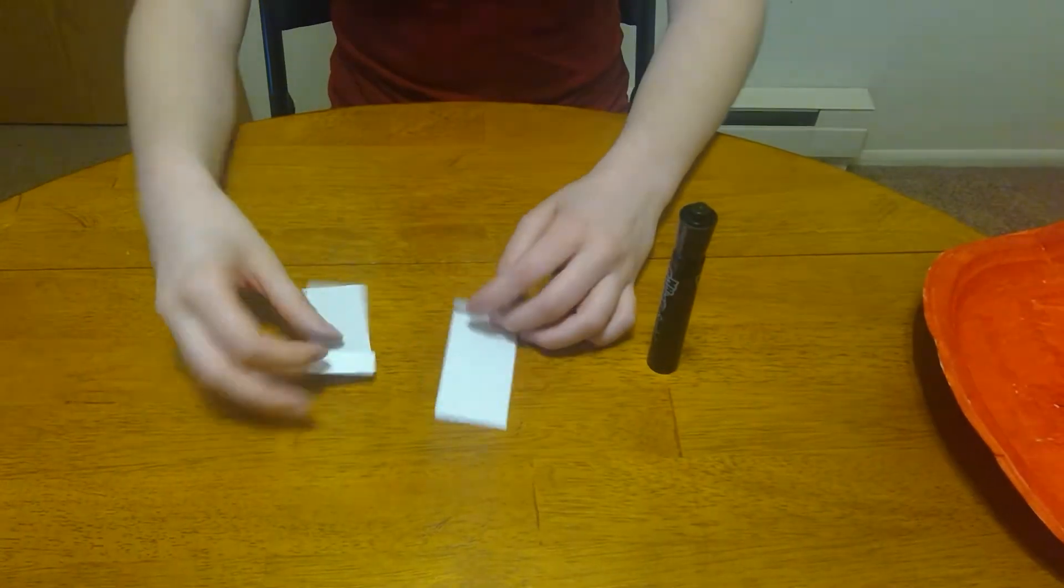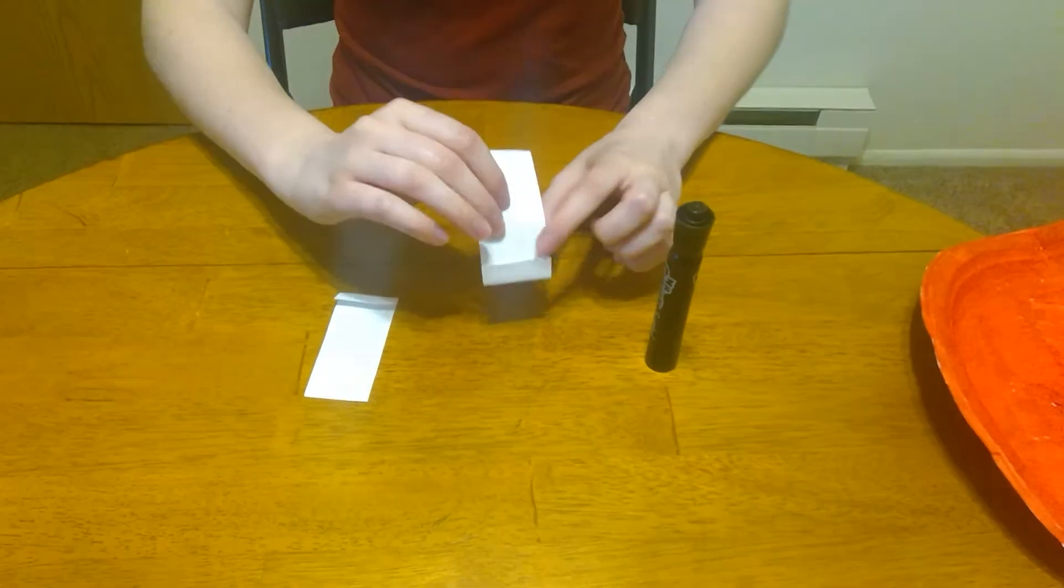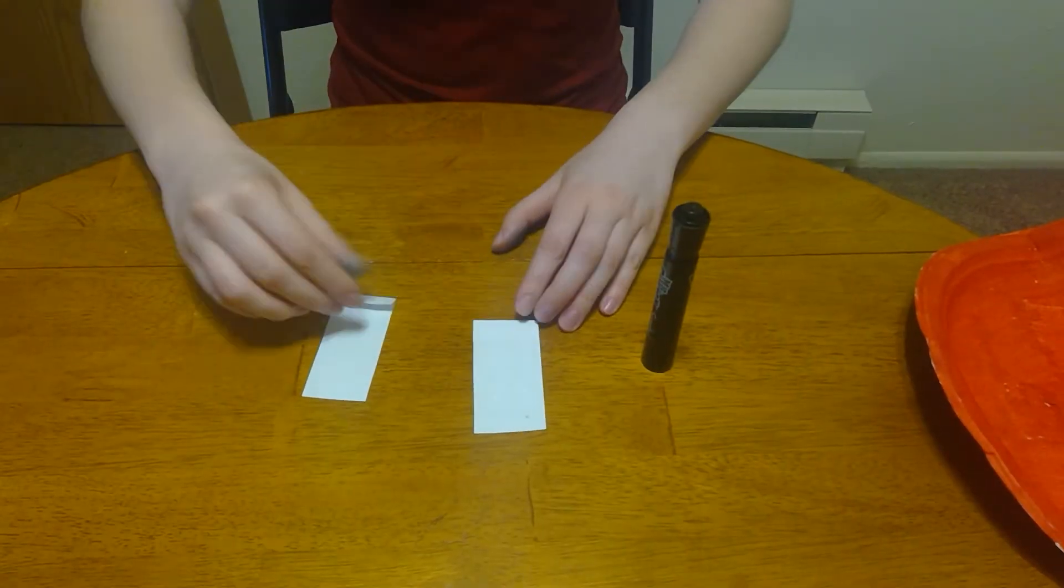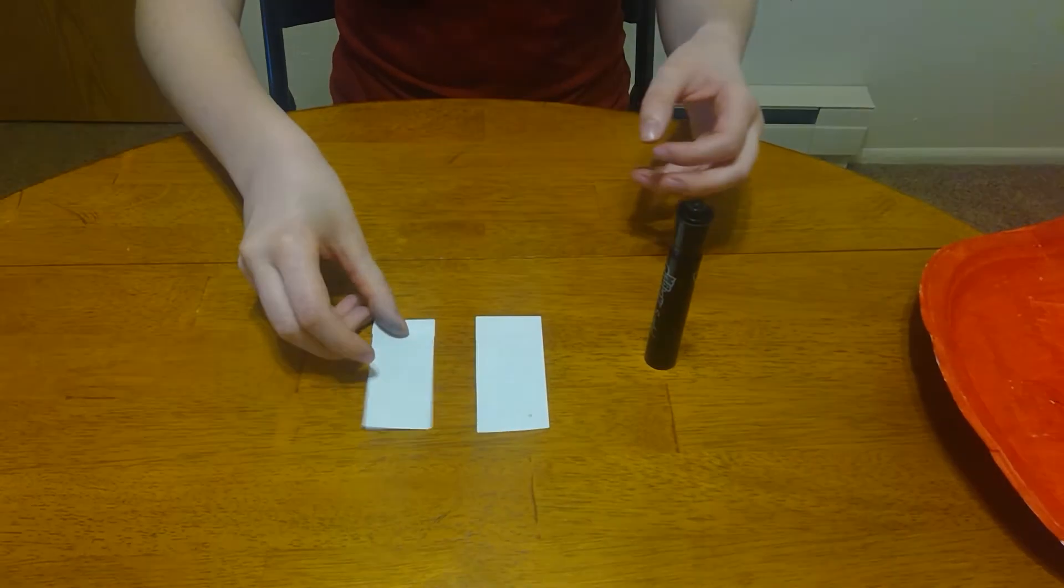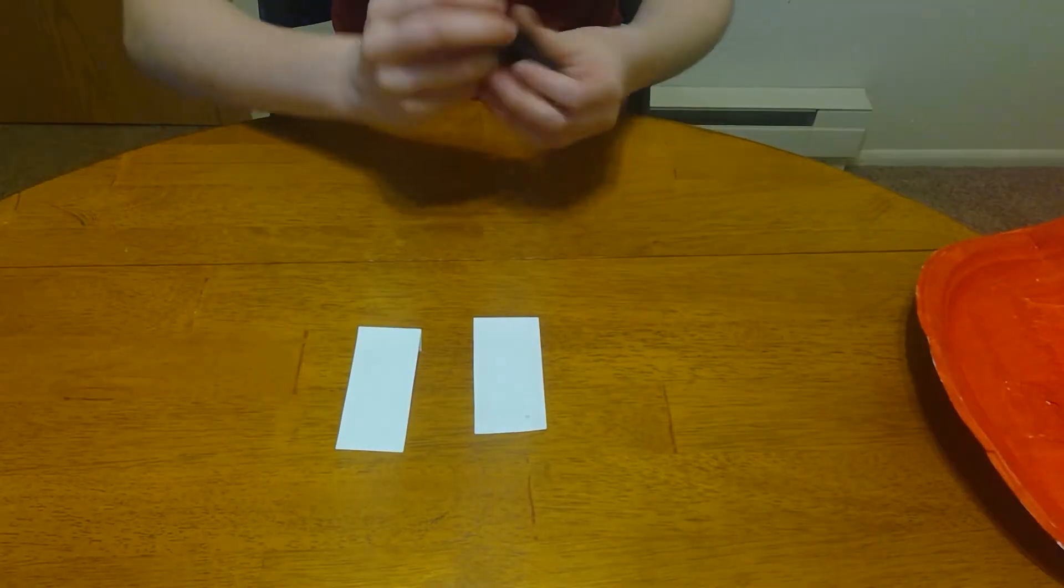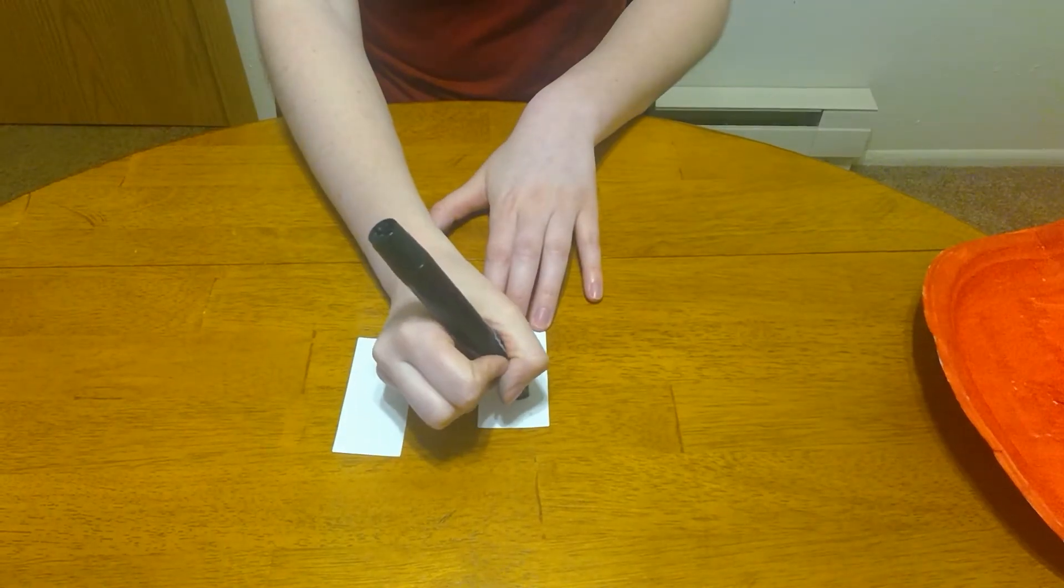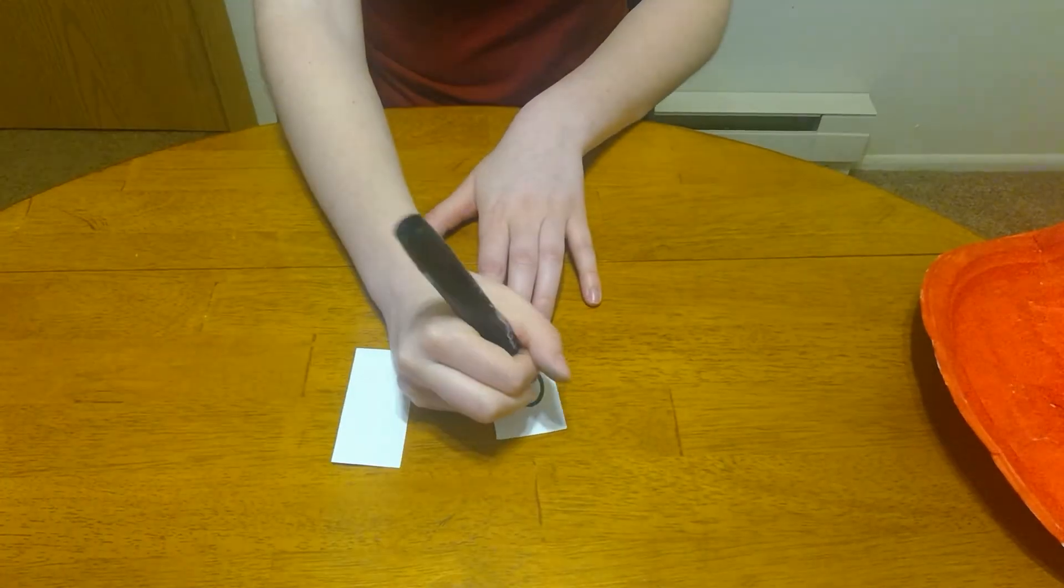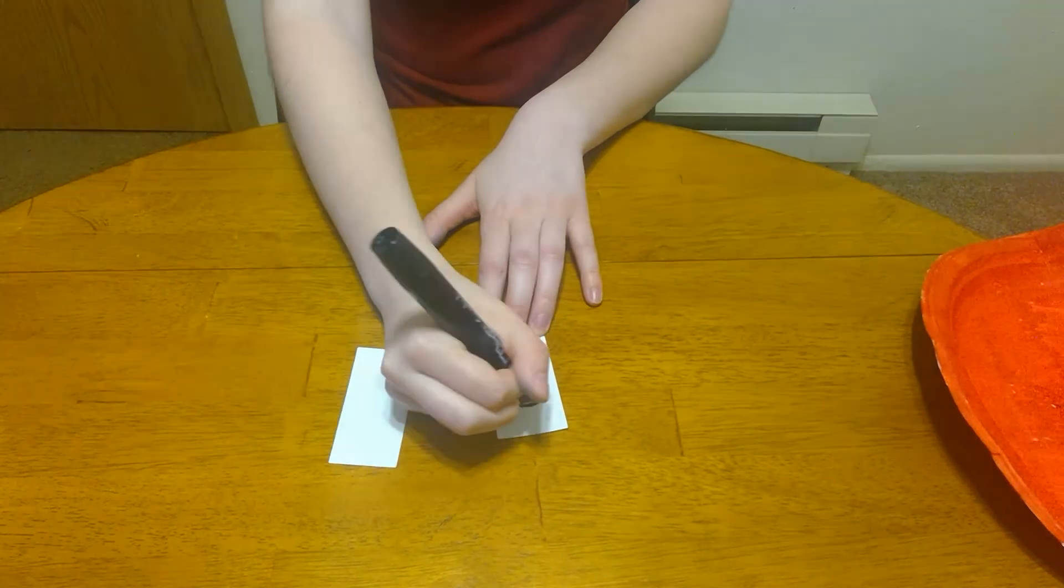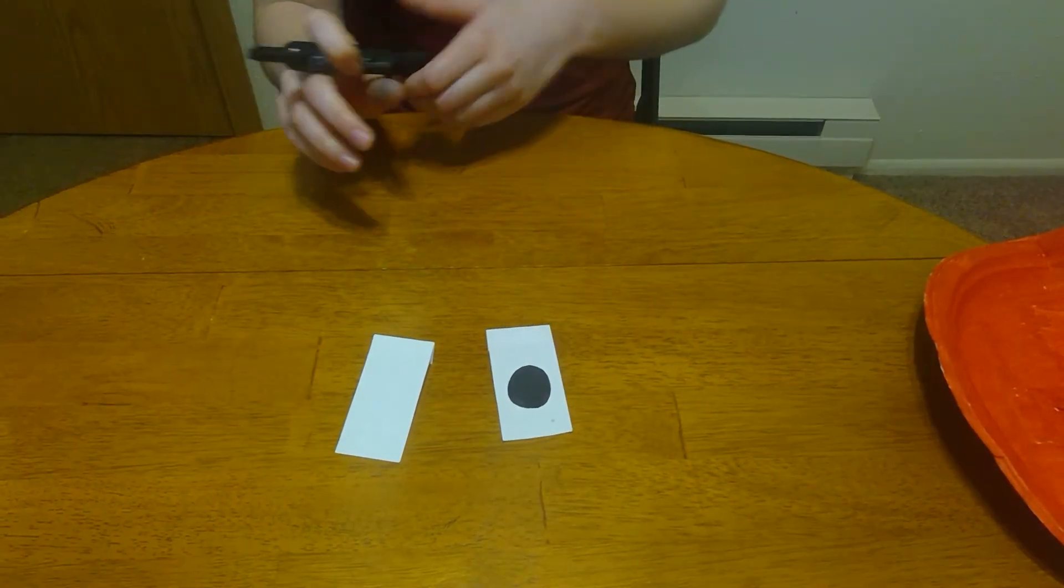Now flip these two pieces of paper over so that the folded end is touching the table. Now you're going to draw either a circle or an oval and color it in. And then do that for the other one.